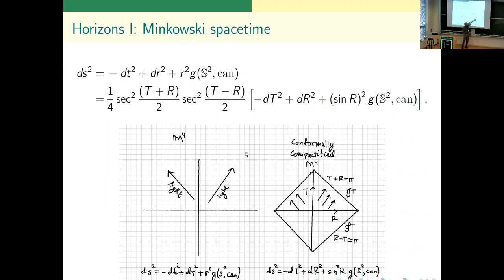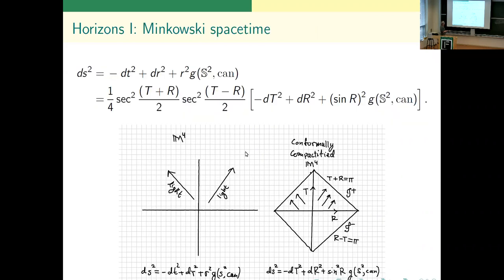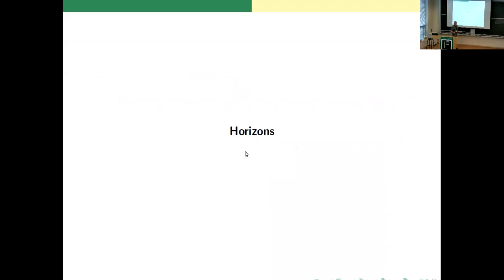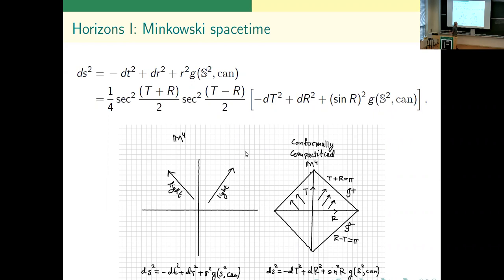If you do that, you pull the infinite regions in and you get a diamond-shaped picture like this where the light rays all end up going to the future along here. Every time-like curve will end up there, and the past will be mapped into the bottom part of that diagram. These are generally called conformal diagrams or Penrose-Carter diagrams.